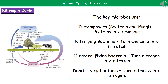The first cycle we're going to look at is the nitrogen cycle, summarized in the diagram on the left. This looks quite complicated, but if you remember what four key microbes do, you're a long way there. Your first microbe are the decomposers — bacteria and fungi — and these change proteins into ammonia, as you can see on the right hand side of the diagram.